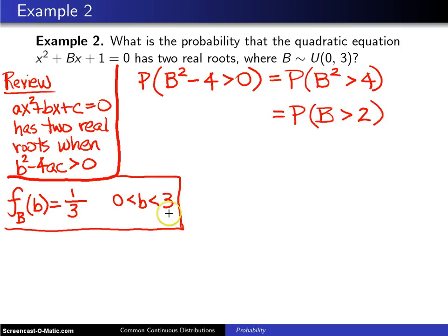We do not need to concern ourselves with negative values of b because we have set up the problem in a manner so that b is between 0 and 3. And the probability b is greater than 2, how do you determine that?